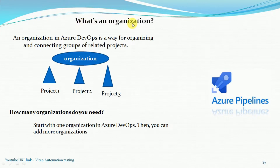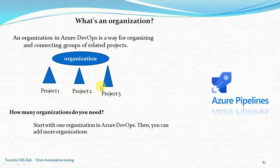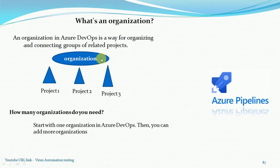On my screen, you can see what's an organization. An organization in Azure DevOps is a way — it's the mechanism for organizing and connecting the group of related projects. We have multiple projects support: Project 1, Project 2, and Project 3. Project 1 is the automation project, Project 2 is the BDD Cucumber automation project, and Project 3 is the DevOps project. All projects are working with different teams but within one organization.